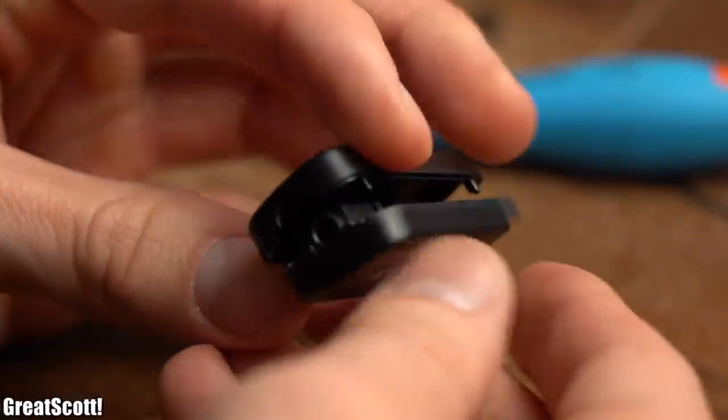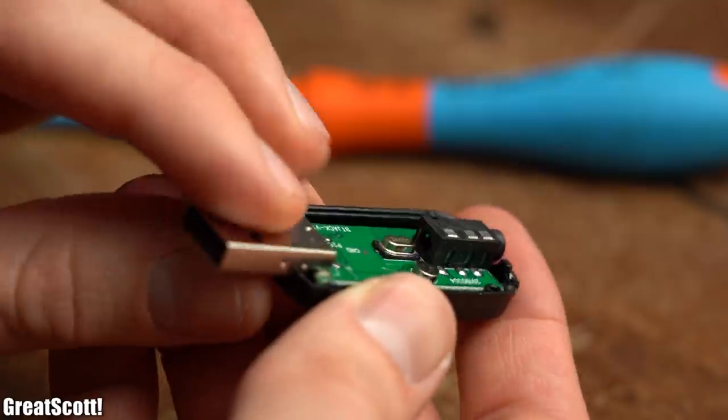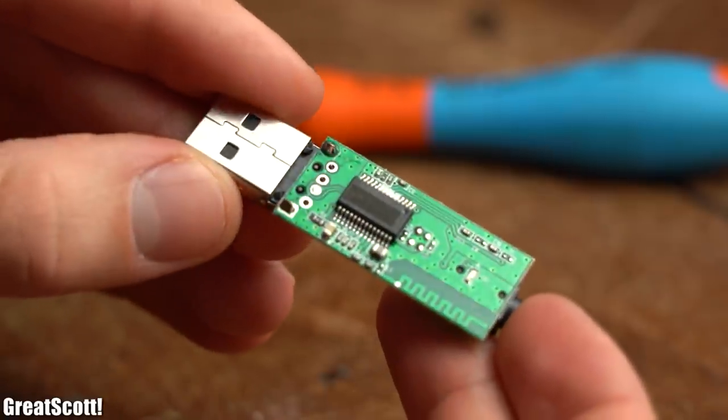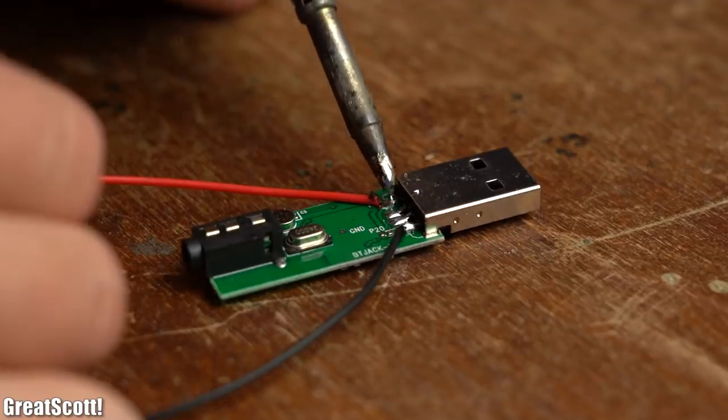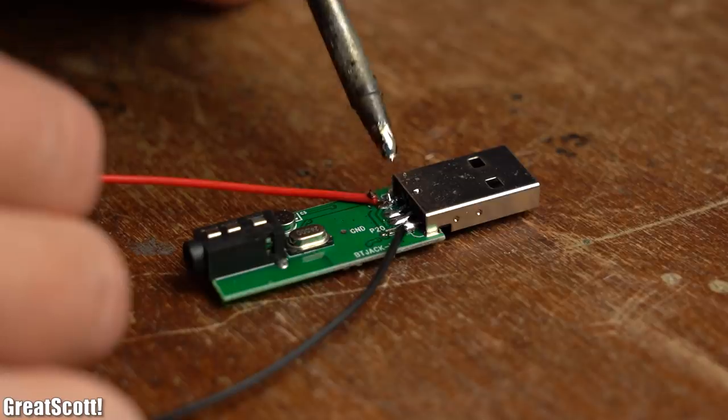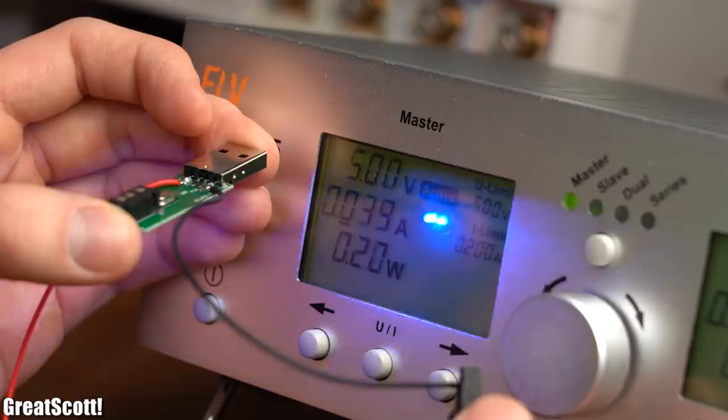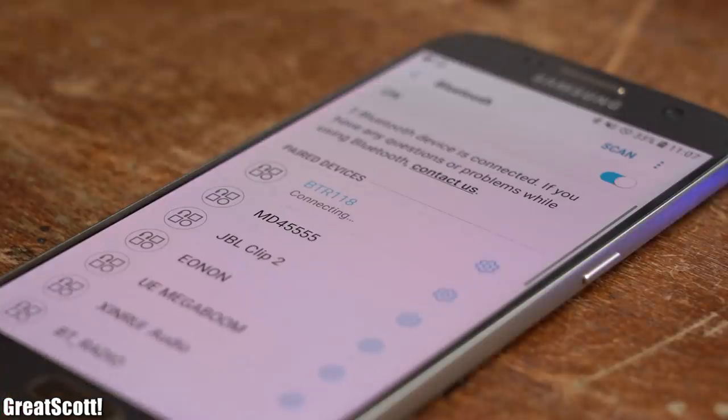To properly recreate the interference problem, I started by removing the housing of the Bluetooth music receiver. After soldering a wire to its ground and 5V pin, I hooked it up to 5V power to find out that it still works fine and that my smartphone can connect to it.